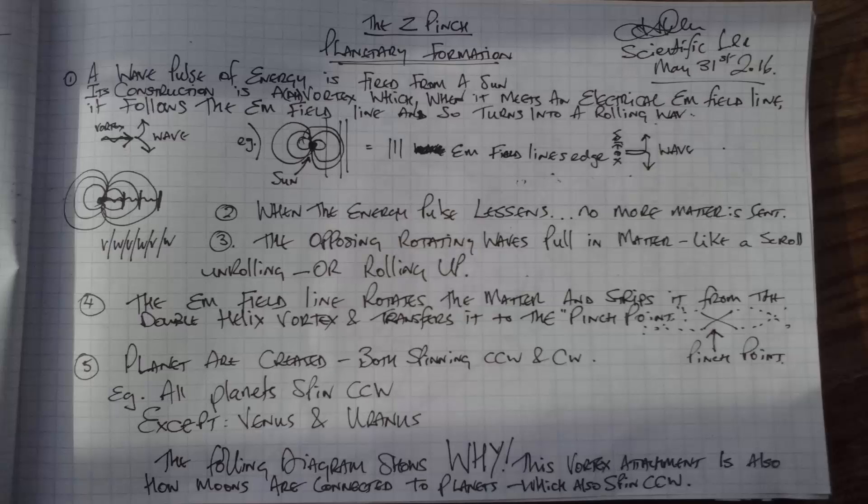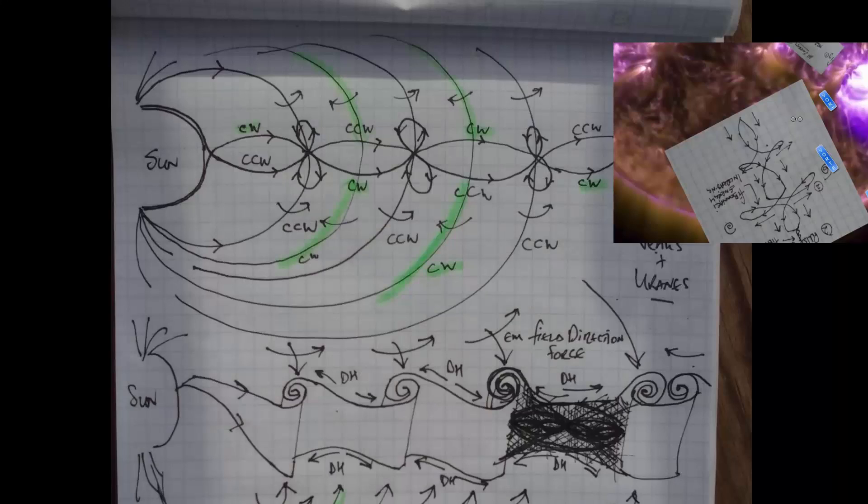All planets spin counterclockwise except Venus and Uranus. The following diagram shows why. This vortex attachment is also how moons are connected to planets which also spin counterclockwise. We have three diagrams of the same thing. The top picture is the wave picture I've drawn on the right, which was confirmed by vortex to wave movement that we can see on the video.